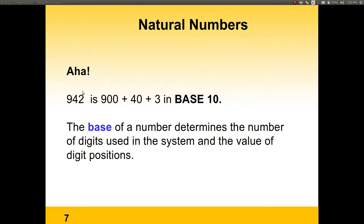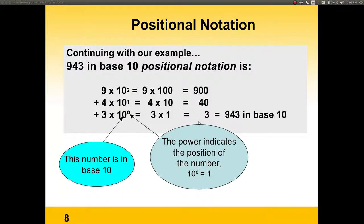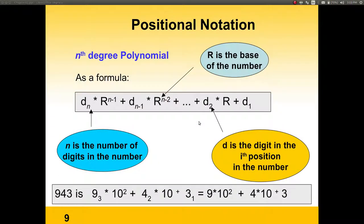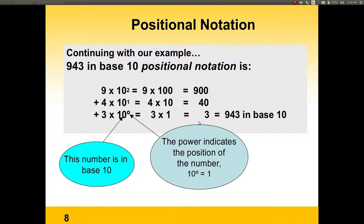We count the positions as position 0, position 1, position 2. All numbers in base 10 will always use the digits 0 through 9. If we were to represent 943 in base 10, we can see that it's 9 times the base — which is 10 — to the power of the position of that 9 in the number. In this case, to the square, because it's in the second position. That gives us 9 times 100, which is 900.